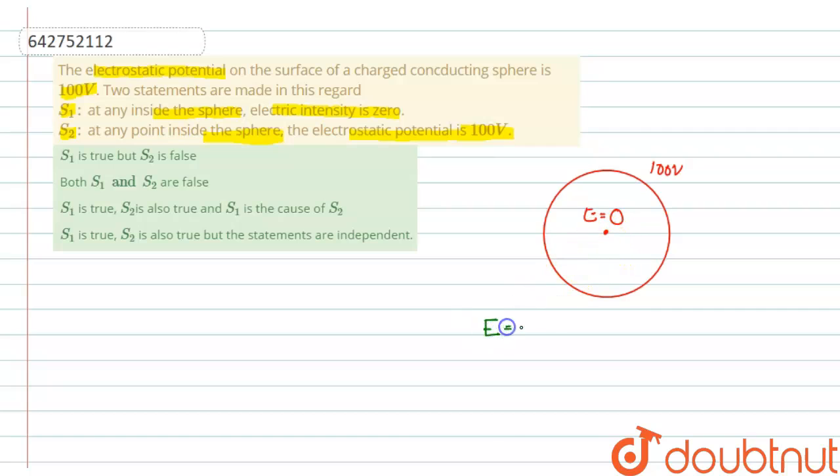Electric field intensity and potential are related as E equals dV by dR. E equals 0 implies that dV by dR equals 0. Hence, V equals constant.